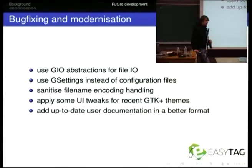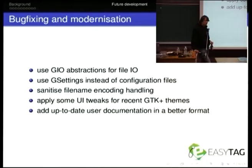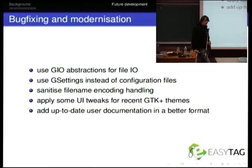Some future things we'd like to do: EasyTag doesn't really work if you mount a file system — say a CIFS file system — and then want to edit tags on it. You can't really do that because it's using all the POSIX calls for opening files. This makes porting to Windows a little bit awkward, though it kind of works. It would be nice to use the abstractions in GLib and GIO for that. I've started doing that for temporary files, and that's going to take a long while, but it would really help.